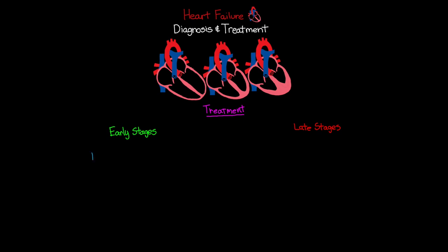The first early-stage intervention is exercise, which increases the strength of the heart and builds that efficient pumping ability. Along with exercise comes the importance of diet. Two key focuses are a reduction in salt intake — to help decrease blood pressure, one of the risk factors for heart failure progression — and a reduction in fats, to reduce the risk of plaque buildup and coronary artery disease.